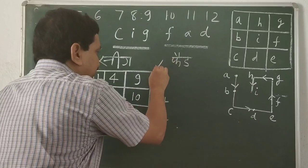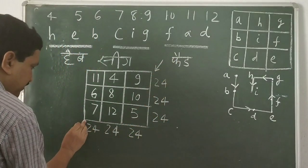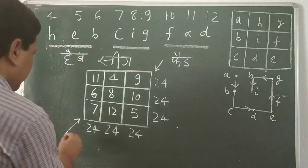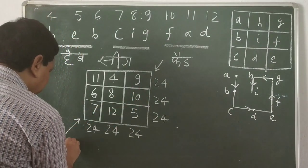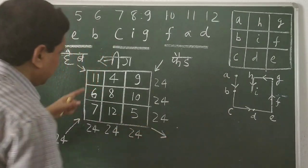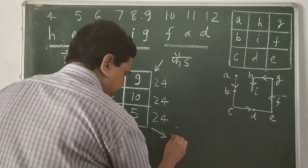Now let us check diagonally. 7 plus 8. 15. 15 plus 9 is again 24. So the diagonal sum is also this side. This way diagonal. Let us see this way. 11 plus 8. 19. Plus 5 is 24.